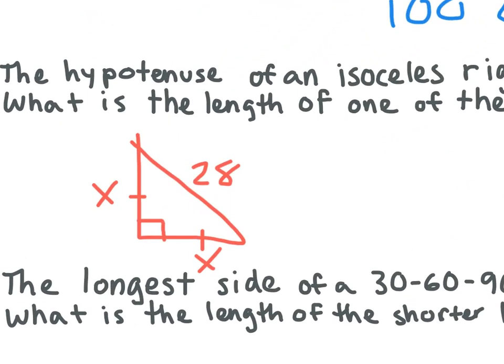So if this is an isosceles triangle, what would that mean the angles are going to be? The same. So what would the angles be? 45 and 45. So this is a 45-45-90 triangle. If it gives us our hypotenuse and we have to go backwards to find X, what do we need to do? Divide by square root 2.